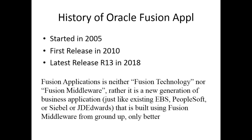In Fusion Apps, it's not just functionality — they also implemented new technology, including SOA services, ADF pages, and BPM. Developers often get confused between Fusion Technology, Fusion Apps, and Fusion Middleware. Fusion Apps is an ERP. Fusion Technology — or Fusion Middleware — is the middleware product used to build Fusion Applications. Fusion Middleware is independent and can also be used to build non-Oracle products.